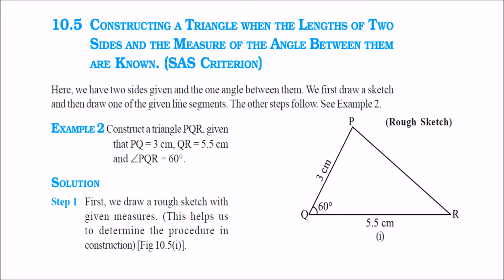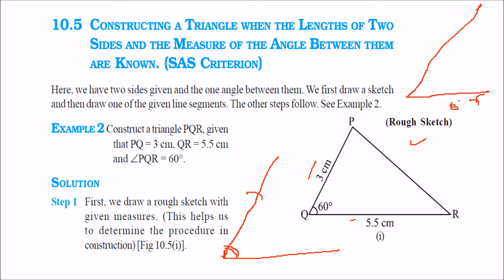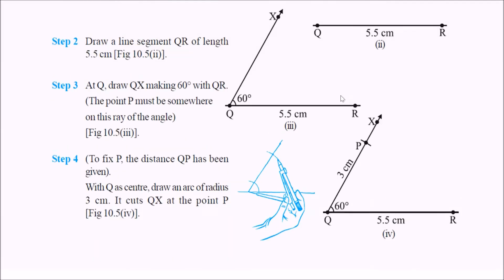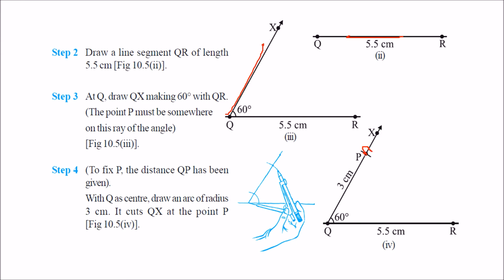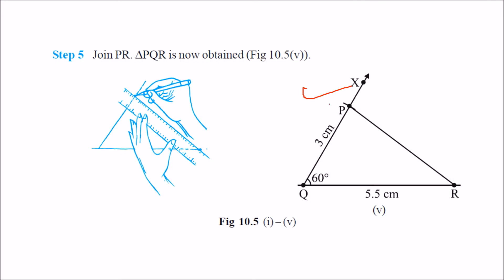Next, we use the SAS criterion to make a triangle. Here we have two sides and the angle between them — this angle is included between those two sides. Make a rough sketch. We will make a line of 5.5, then make an angle of 60 degrees at one end, take radius 3 from that end, cut an arc, and join. Alternatively: make 5.5, make an angle of 60 degrees, place a point with radius 3, cut it, and join. This is your required triangle.